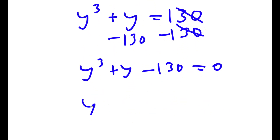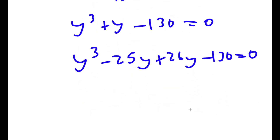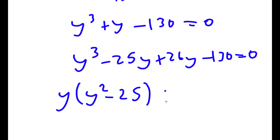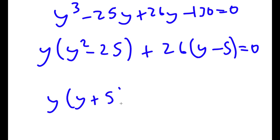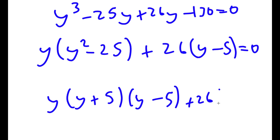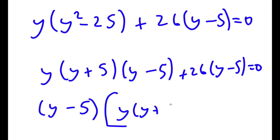I'm going to rewrite y as negative 25y plus 26y, giving y cubed minus 25y plus 26y minus 130 equals 0. For y cubed minus 25y, the greatest common factor is y, giving y times (y squared minus 25). For 26y minus 130, the greatest common factor is 26, giving 26 times (y minus 5). And y squared minus 25 factors as (y plus 5)(y minus 5).